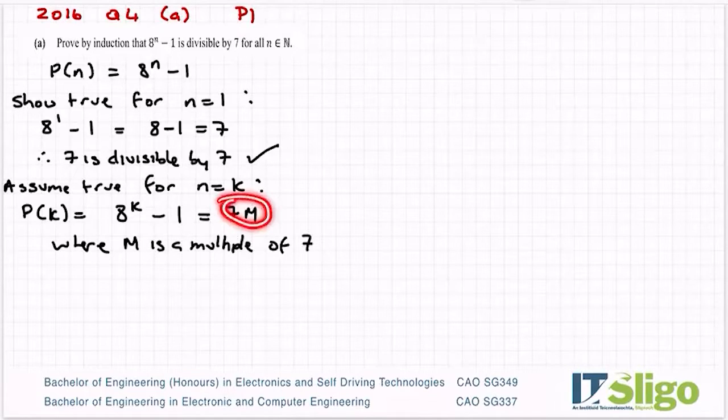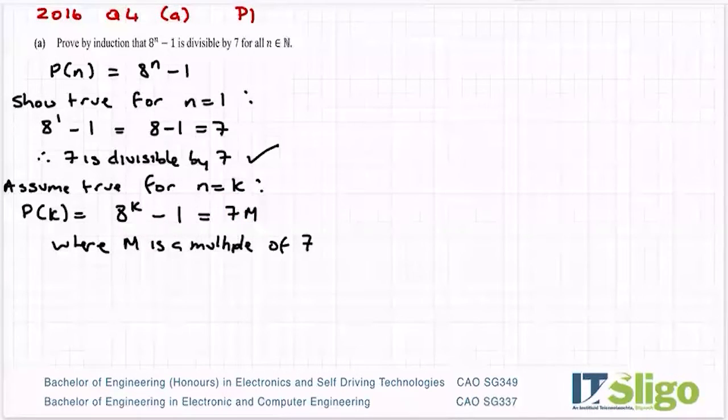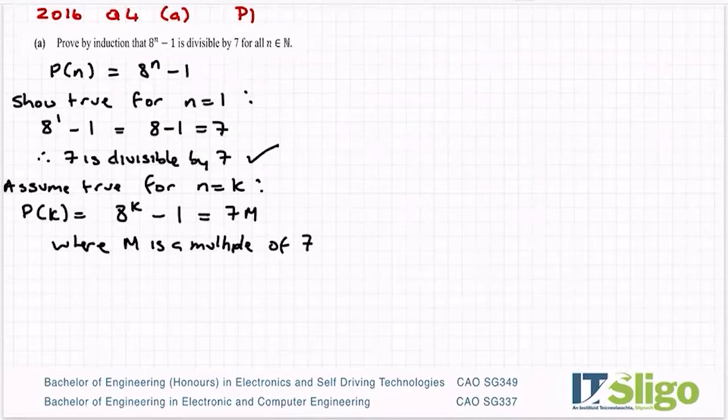So in other words if 7 divides into this then my answer is going to be a multiple of 7, 14, 21 or 1, 2, 3, 4, 5. So rather than a multiple I'll just say where m is a whole number basically.